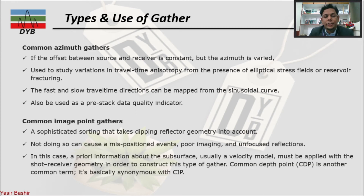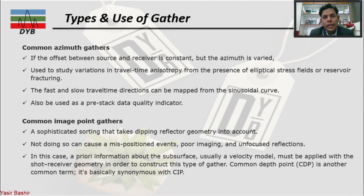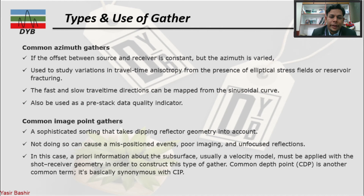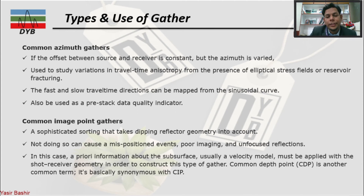Another gather type is the common image point gather. It is actually sophisticated sorting that takes dipping reflector geometry into account. Normally, if we have dipping reflectors or a highly faulted zone in the subsurface, we use the common image point gather. It can cause mispositioned events such as poor imaging or unfocused reflections if not handled correctly. A velocity model must be applied with the shot gather geometry to construct this type of gather. The common depth point is another term for the common image point.